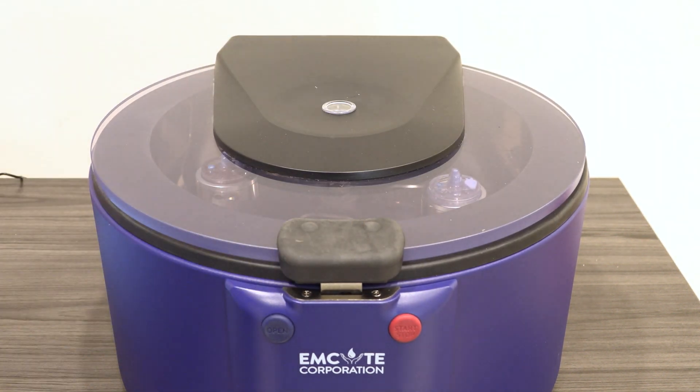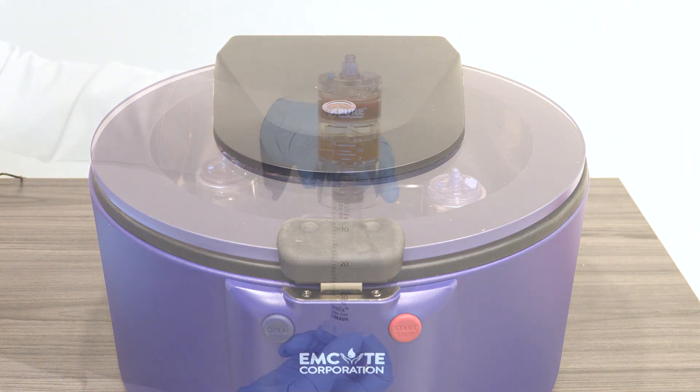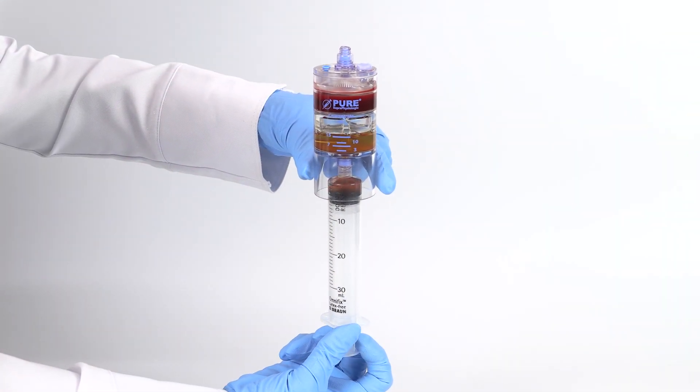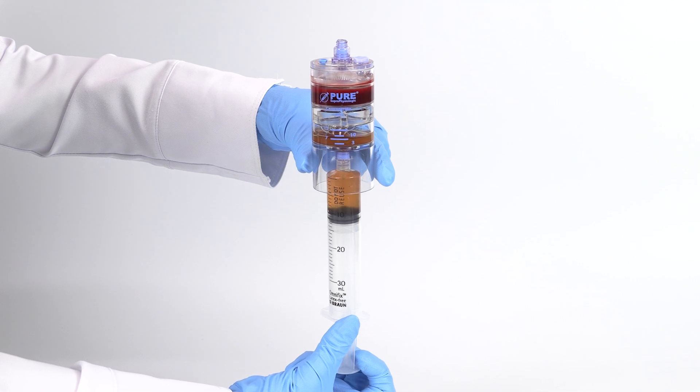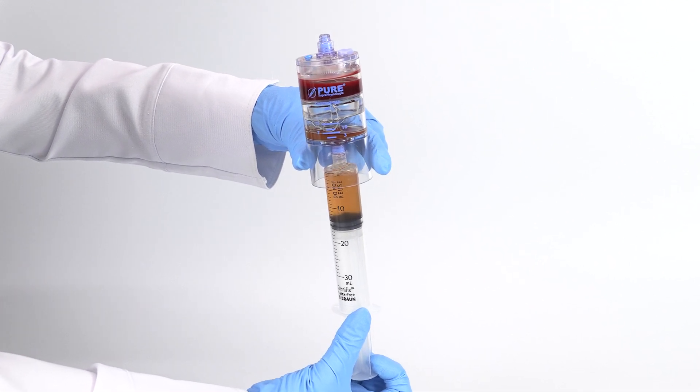Attach a sterile syringe to the needleless port and aspirate the bone marrow plasma, leaving 3-4 milliliters of solution in the device.